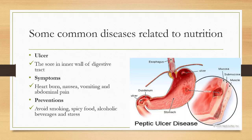The next disease is ulcer. An ulcer occurs in the inner wall of the digestive tract. The inner wall is covered with mucus, which protects the inner membrane from the action of enzymes. When the mucus layer is broken, the digestive enzymes start eating the wall of the stomach and duodenum, resulting in a sore called an ulcer. Symptoms are heartburn, nausea, vomiting, and abdominal pain. Prevention: the patient should avoid smoking, spicy food, alcoholic beverages, and stress.